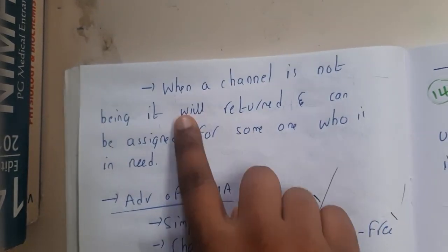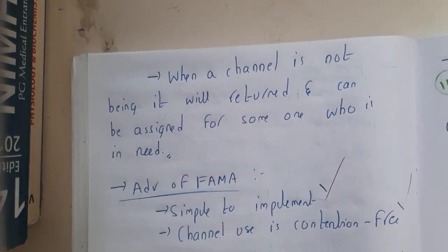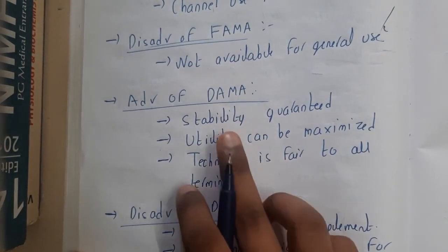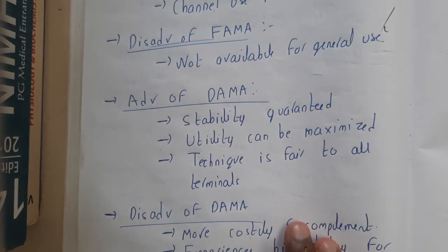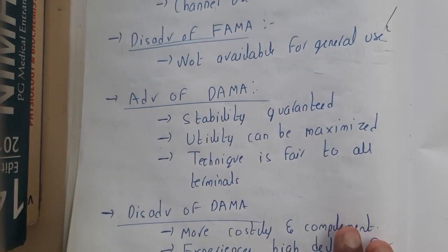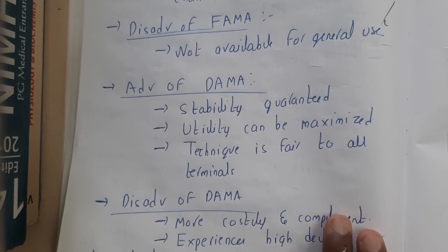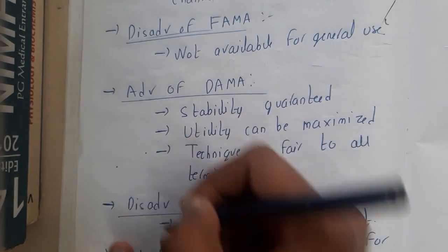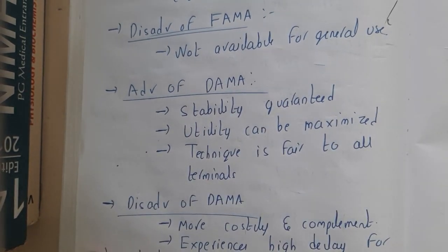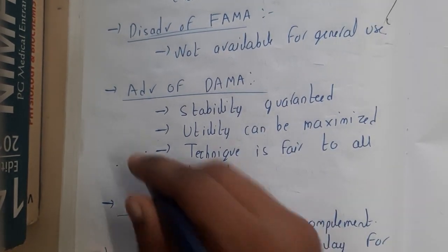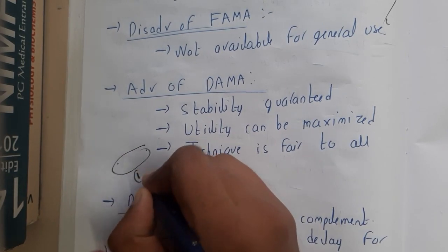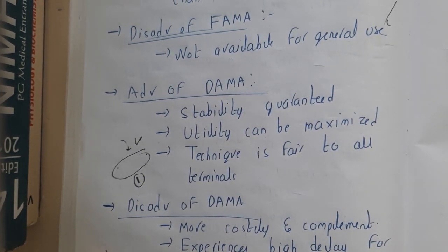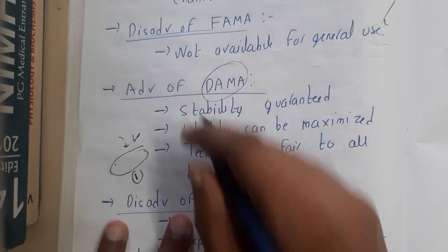When a channel is not being used, it is returned and can be used by someone else. The advantages of DAMA are that stability is guaranteed and utilization can be maximized. For example, if you bought a satellite but communicate with your company only once a month, the other 29 days are wasted — that is why DAMA is better than FAMA in such cases.